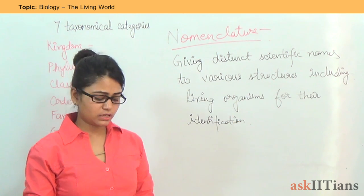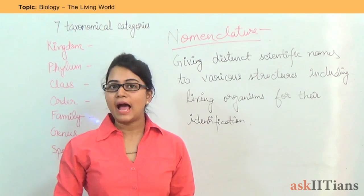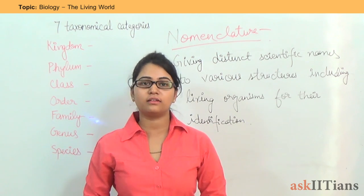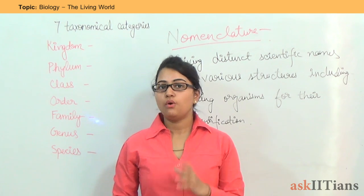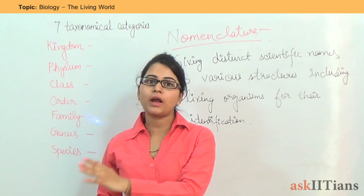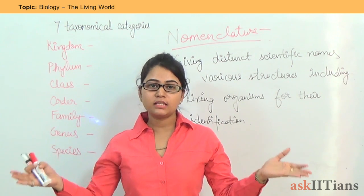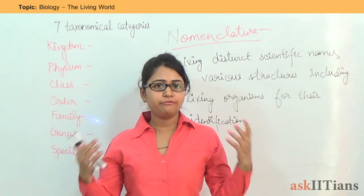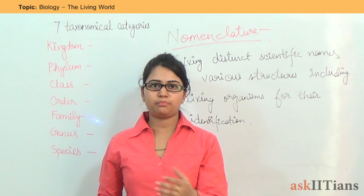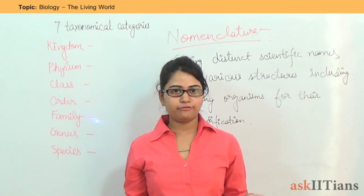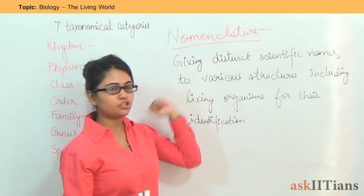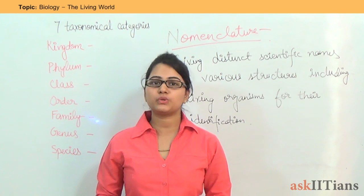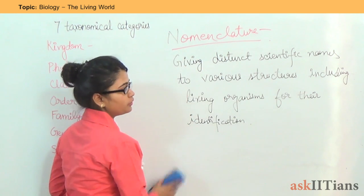Why was this system of nomenclature defined? If seven scientists from seven different countries sit together and have to give a name to a plant, each scientist will coin a name in their own language for that plant. This will create chaos and confusion. In order to remove this confusion, a very defined system of nomenclature was framed, under which Latin words are used to give names to plants and organisms. There are some rules of nomenclature which we are going to discuss.